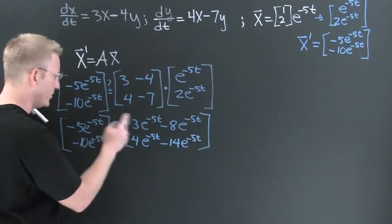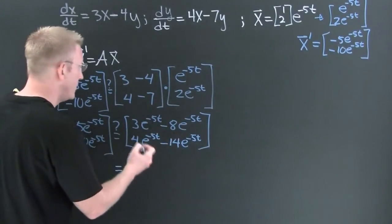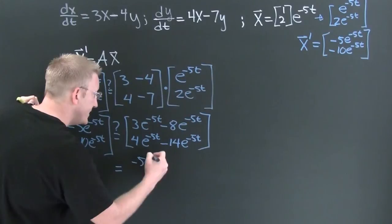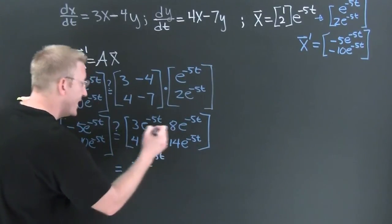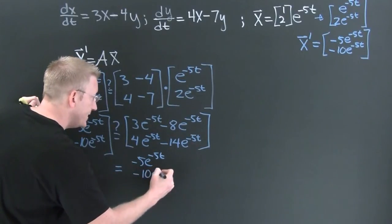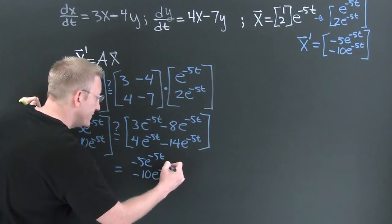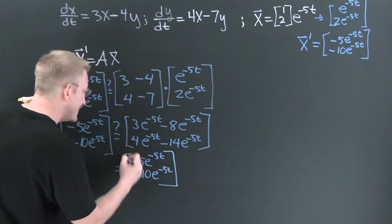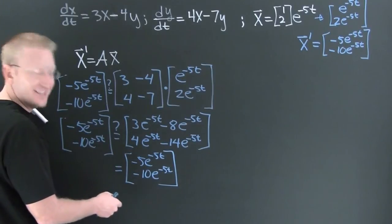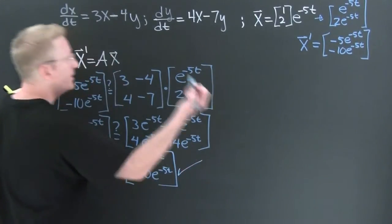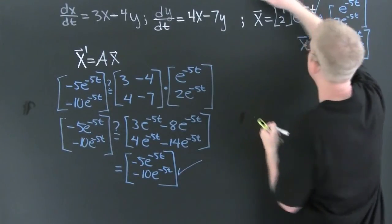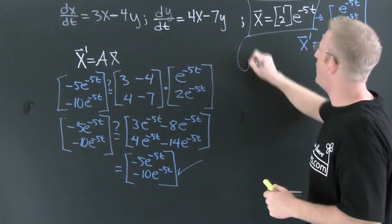Are those the same? Well, let's see. 3 minus 8 is minus 5e to the minus 5t, and 4 minus 14 is a minus 10e to the minus 5t. Is the left side equal to the right side? Are the components matching? Yes. Check. Check. So what can we say? We can say you are a solution.